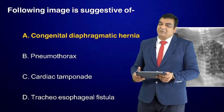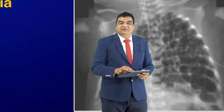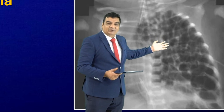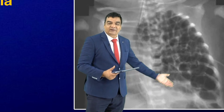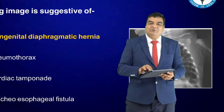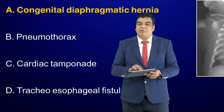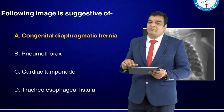This is an overlapping pediatrics question — easy to identify. This is a case where the stomach and intestines have gone up into the thorax, due to congenital diaphragmatic hernia. You can see the intestines coming up into the thorax in a small baby. This was clearly not pneumothorax, cardiac tamponade, or tracheoesophageal fistula, as you can easily identify the loops of bowel in the thorax.